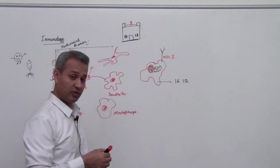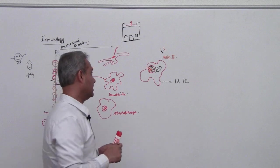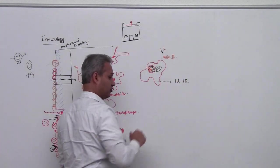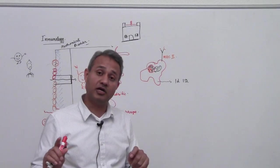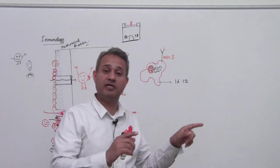Now when the IL-12 is secreted, so pay attention, this macrophage, so before we go to IL-12, this macrophage is actually now going to start running towards the lymph node.